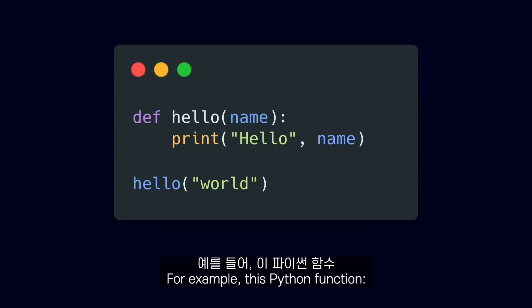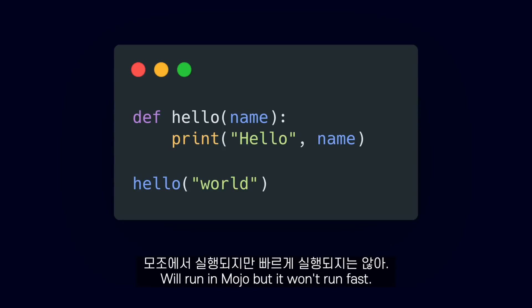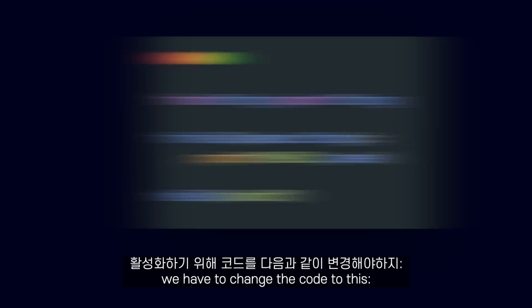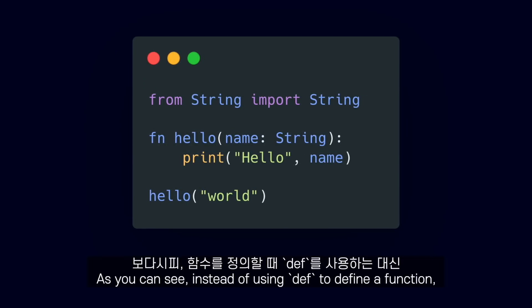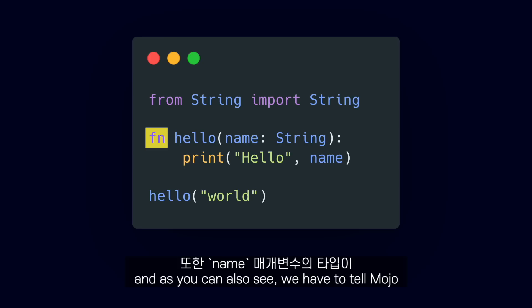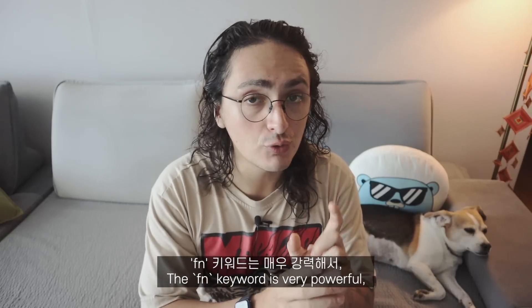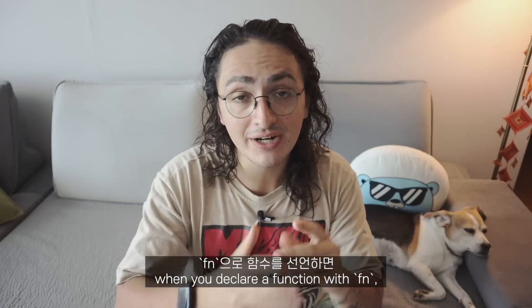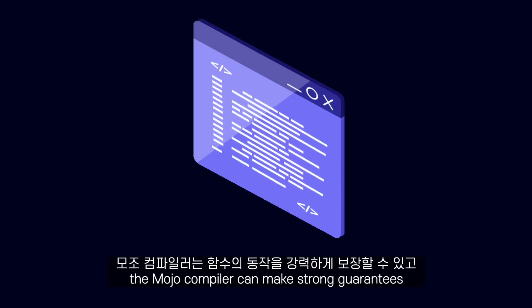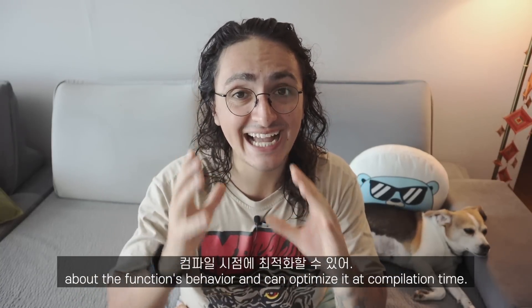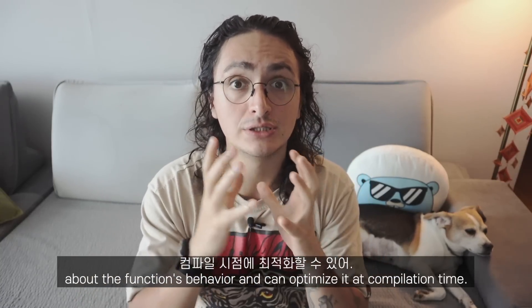If we want to enable fast mode in Mojo, we have to use different keywords. For example, this Python function will run in Mojo, but it won't run fast. To make it faster and enable fast mode, we have to change the code to use the new keyword fn instead of def to define a function. And we also have to tell Mojo that the name parameter is of type string. The fn keyword is very powerful — when you declare a function with fn, the Mojo compiler can make strong guarantees about the function's behavior and optimize it at compile time.